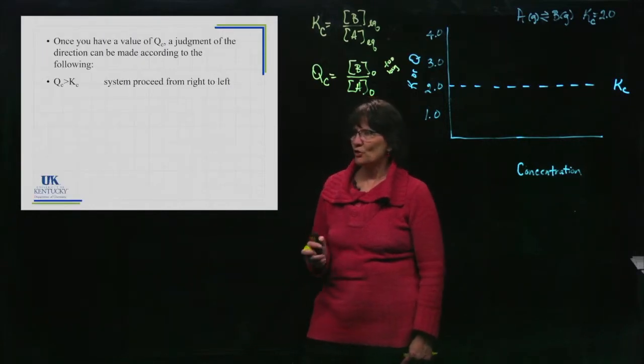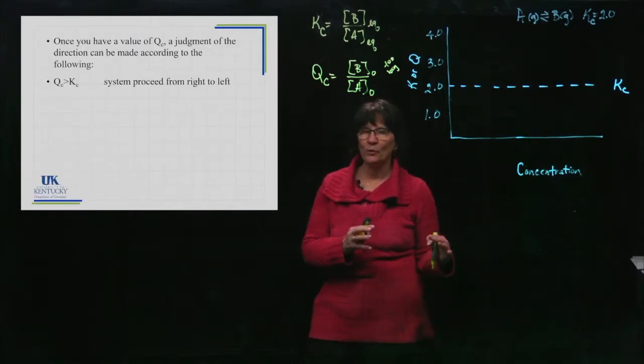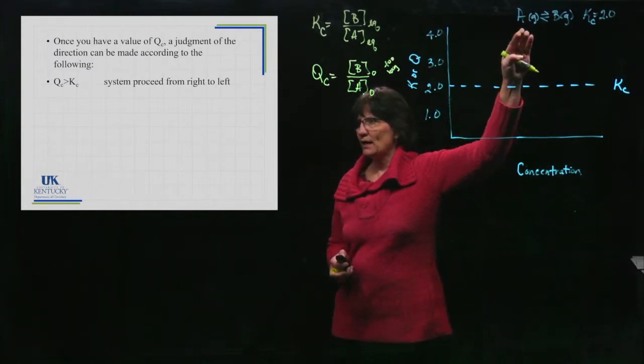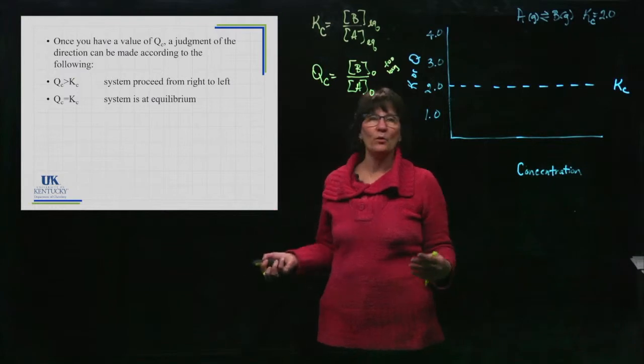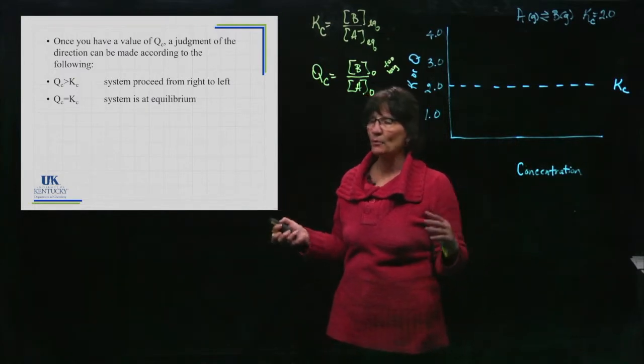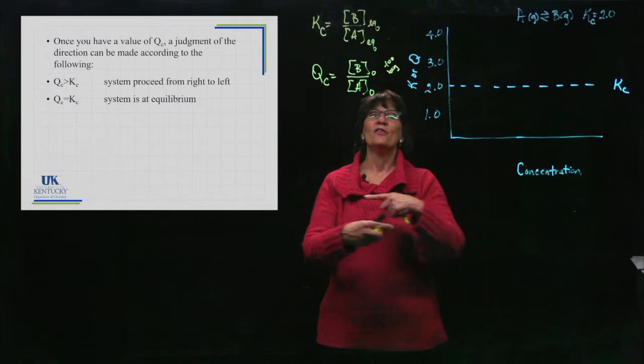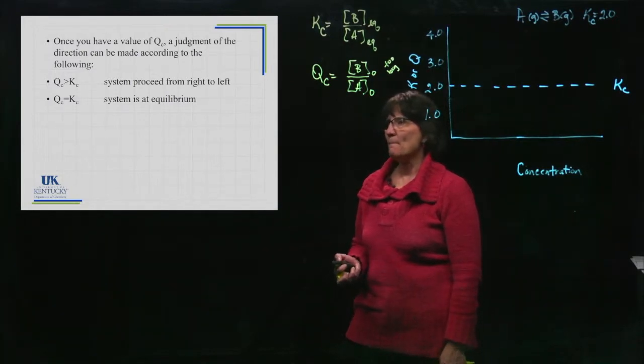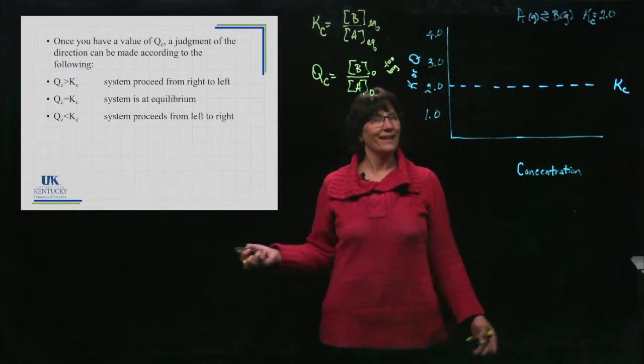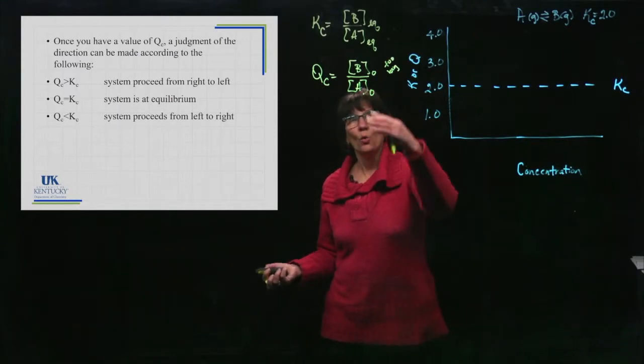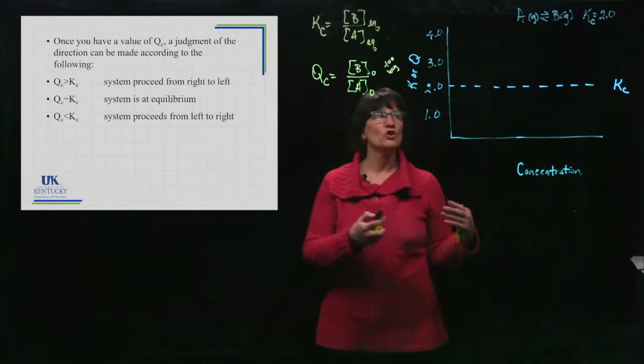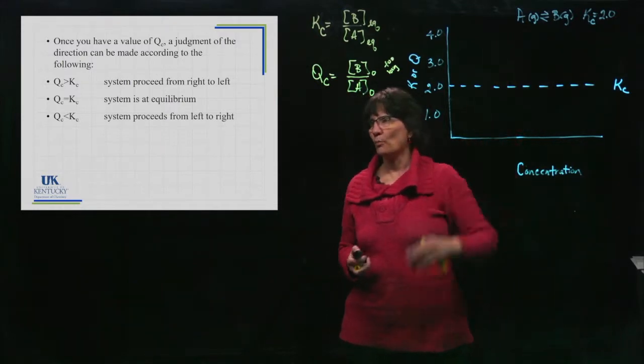All right, so if Q is too small, the equilibrium is going to shift towards this direction. If it happens to be that they're equal, hey, it's at equilibrium and we're good. It's not going to shift one way or the other. The forward and reverse reaction are happening at the same rate. But if it's too small, it's got to get bigger. How does it get bigger? Well, it shifts to form more products and it goes from left to right, forming more products.